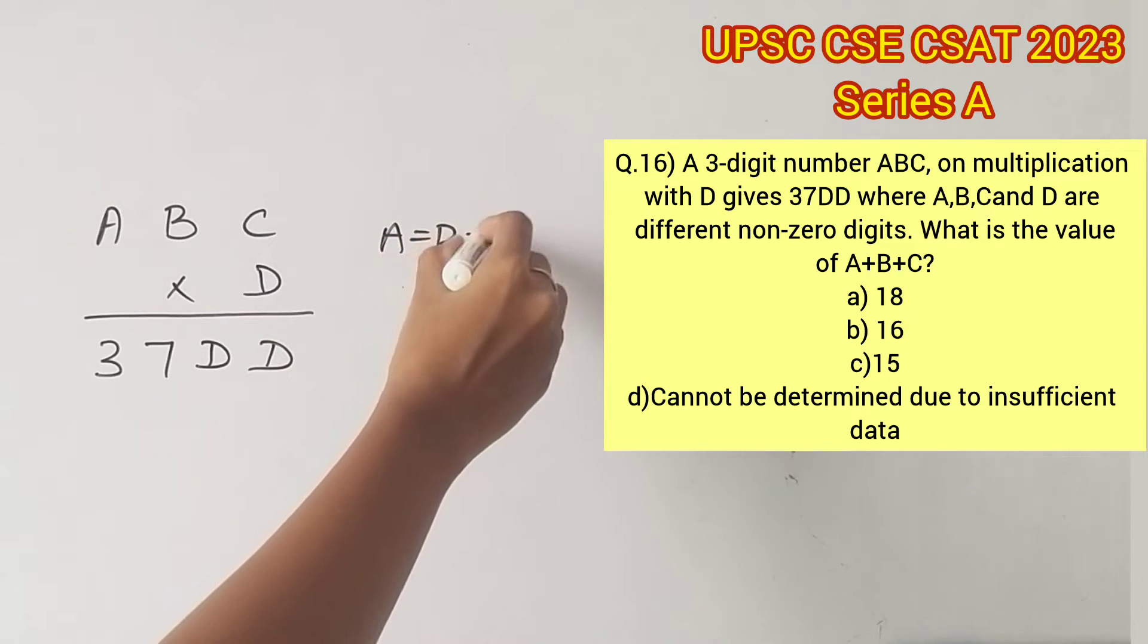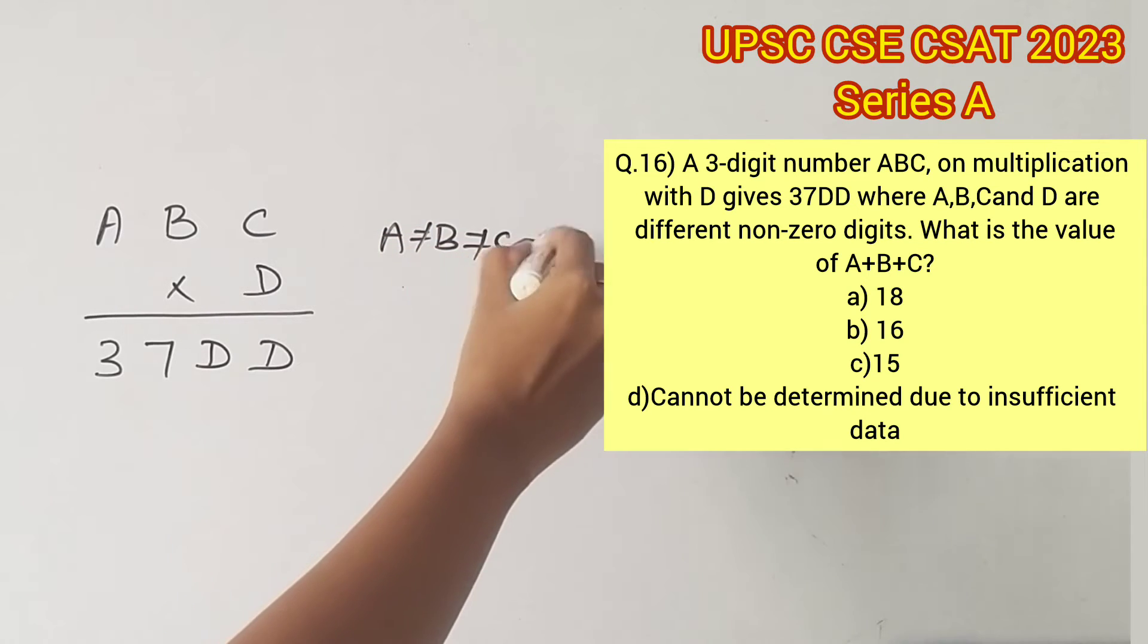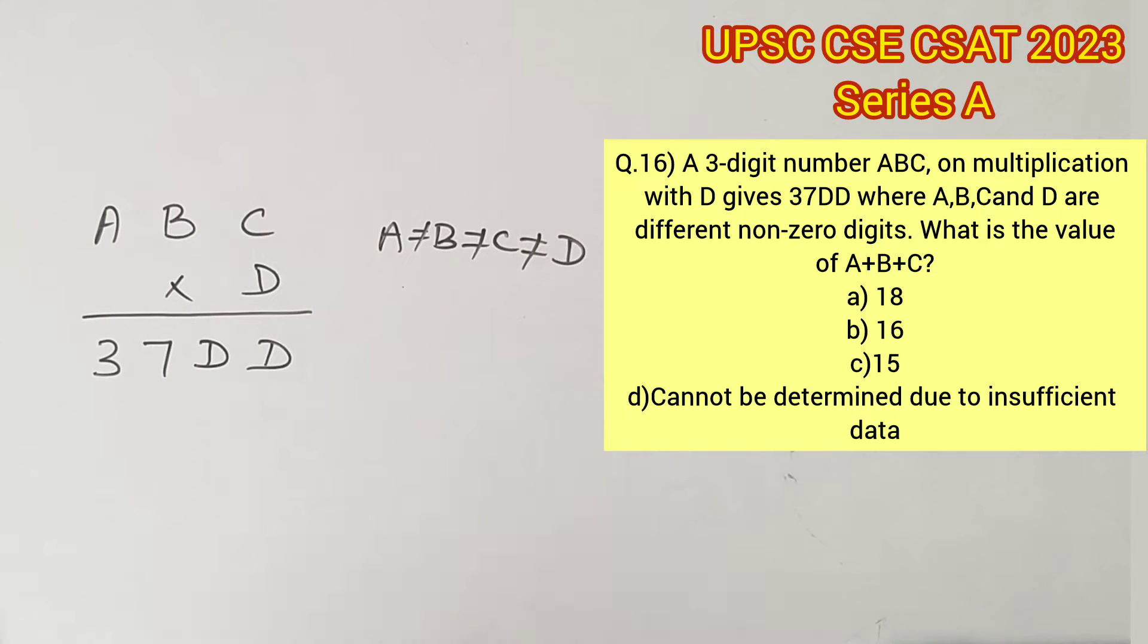It is clear that all four digits are different. Therefore, let's try and take the highest value possible for ABC. That will be 987, and since D is also different, let's take 6 in the place of D. If you multiply 987 into 6, it's going to be a lot larger than 3700.